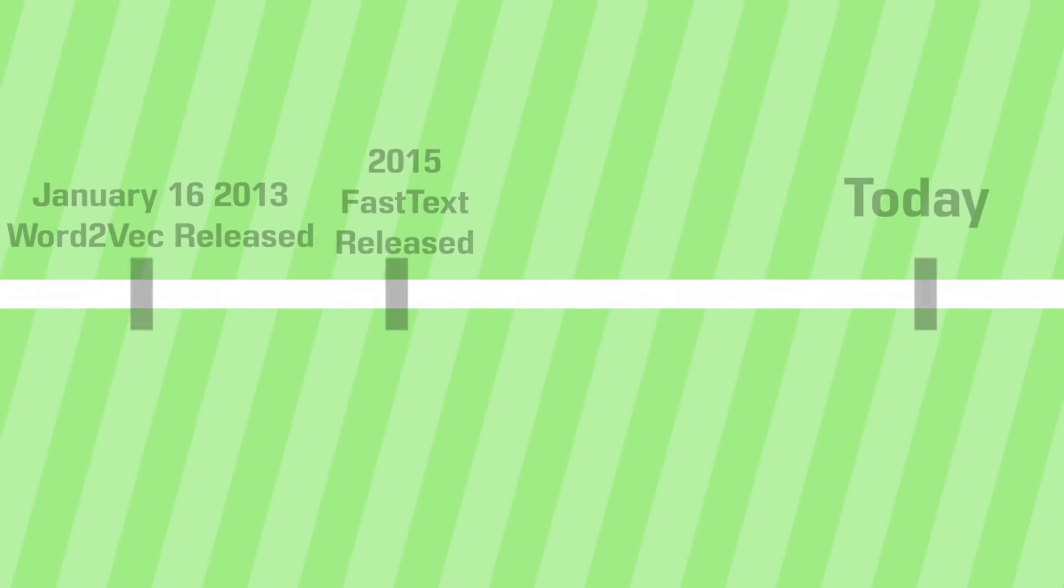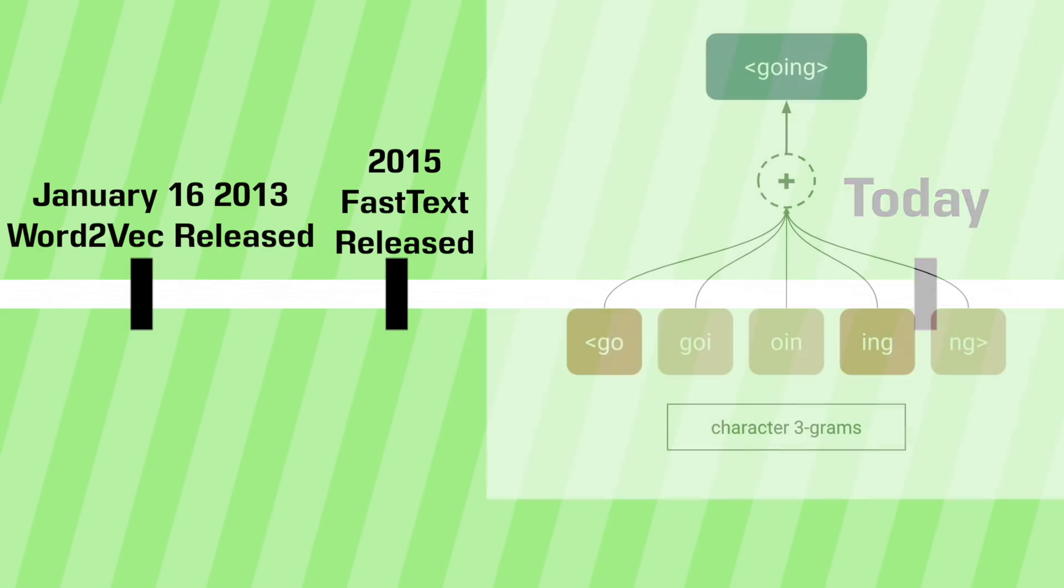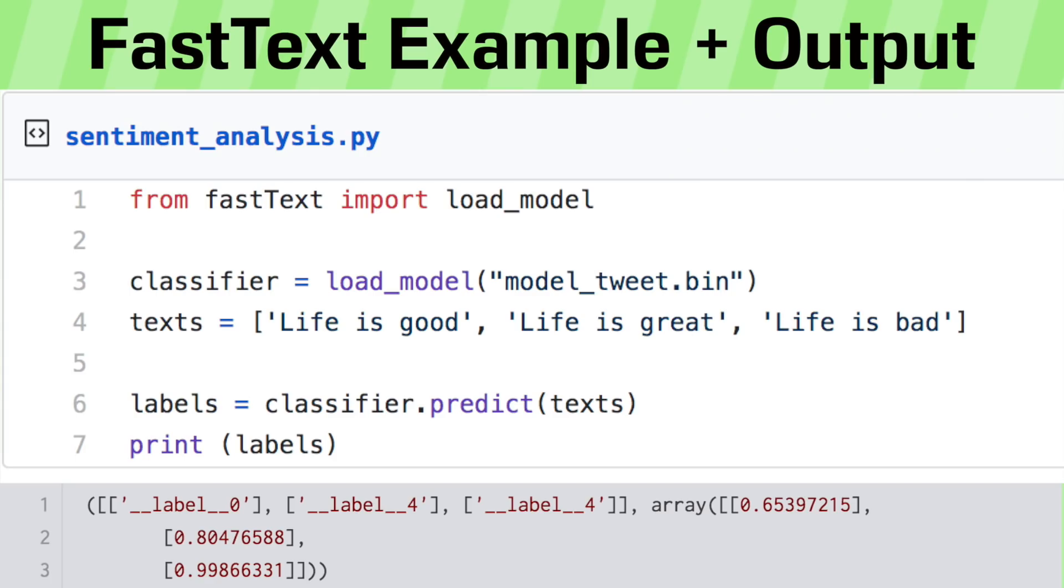Then in 2015, a model called Fast Text extended the Word2Vec model by treating each word vector as the sum of a series of character level vectors. Doing so allowed us to represent rare words, words that didn't show up that often in the training data more robustly since characters are often shared between words.